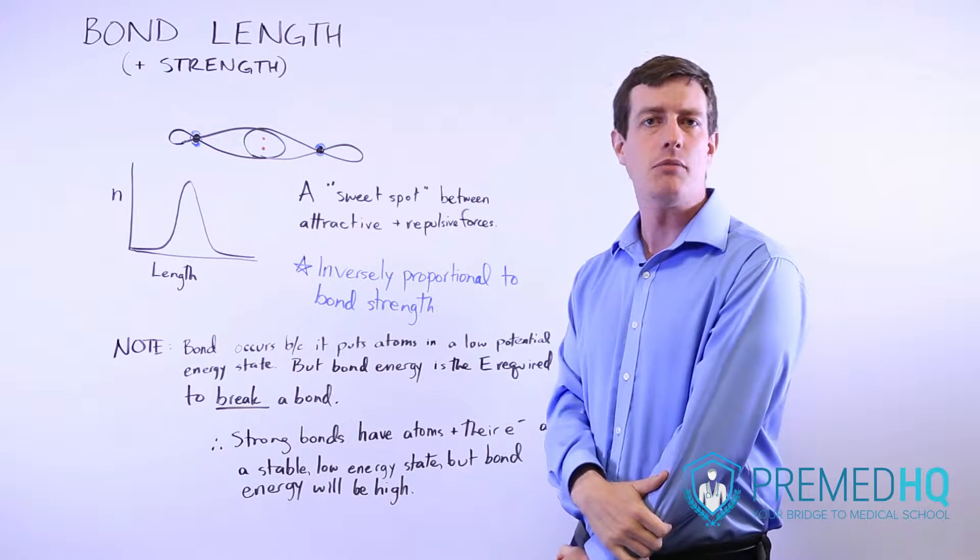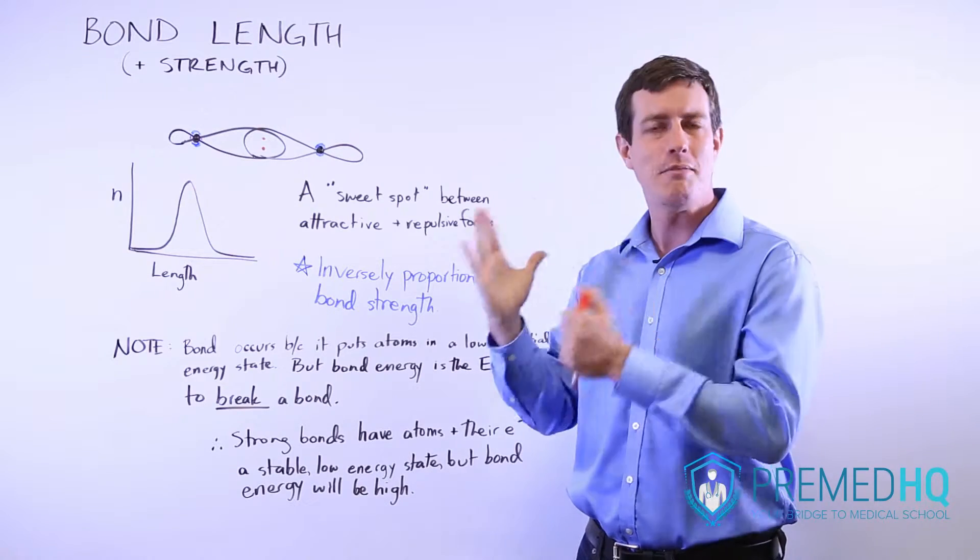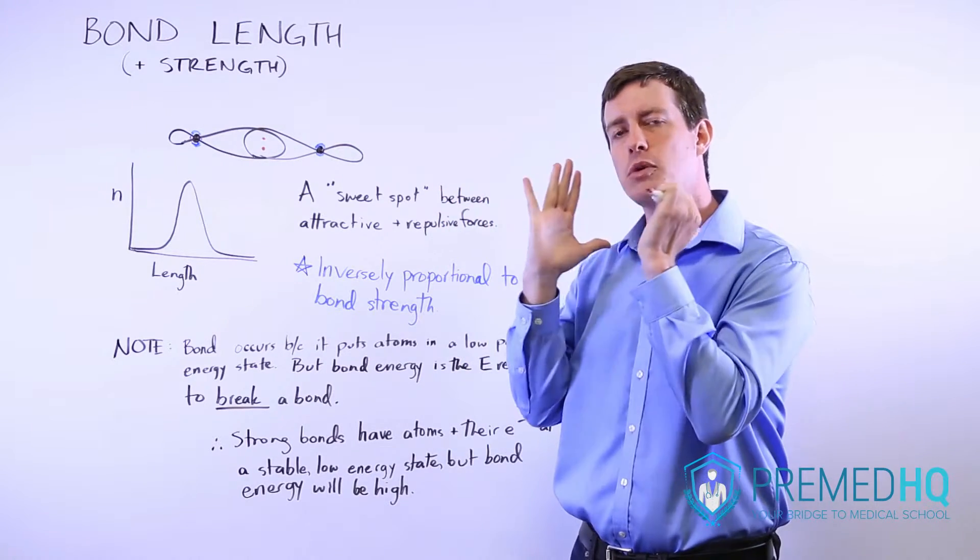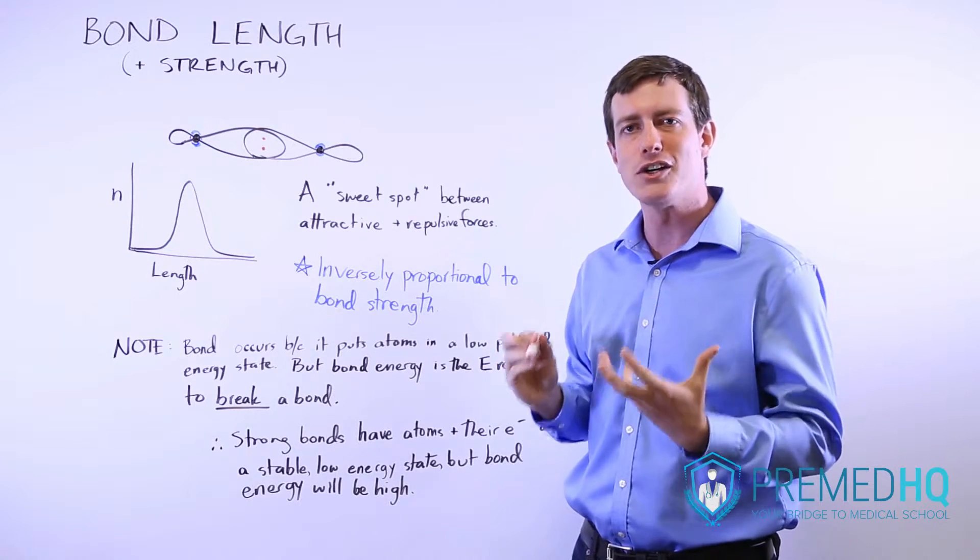You'll notice that if you have double and triple bonds where you have not only the sigma bond but also pi bonds added on top of that, those nuclei will be very close as a result because those are very strong bonds.